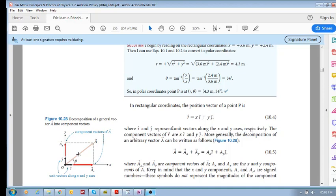i and j represent unit vectors along the x and y axes respectively. Remember that these are your unit vectors in the x and y direction. They've got magnitudes of one in the x and y respectively.